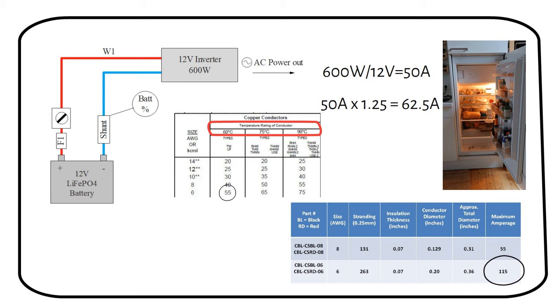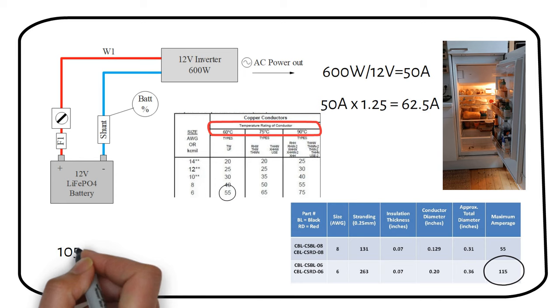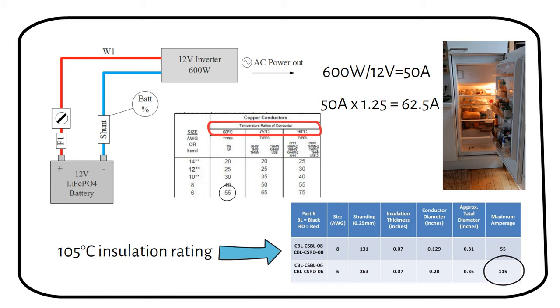Moving forward in this video, we will focus on using welding wire with a 105 degrees Celsius insulation rating, chosen for its quality and the American manufacturer behind it. You will find the link to the supplier in the video description. They can also crimp the cable lugs for you.